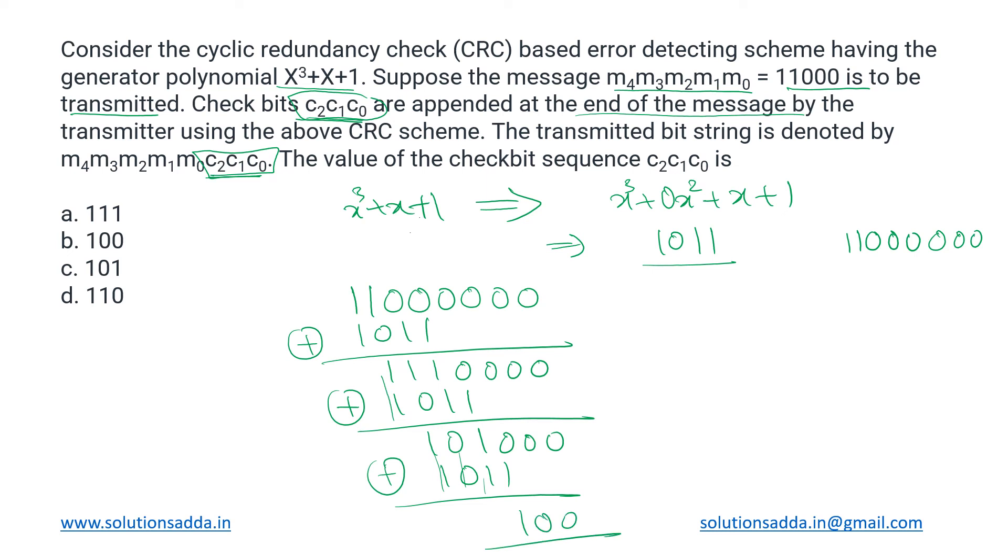So now we have got these three bits which are the actual CRC bits that has to be appended at the end of this message. This is the original message and to its end we will be appending these three bits and then transmitting it over the link.